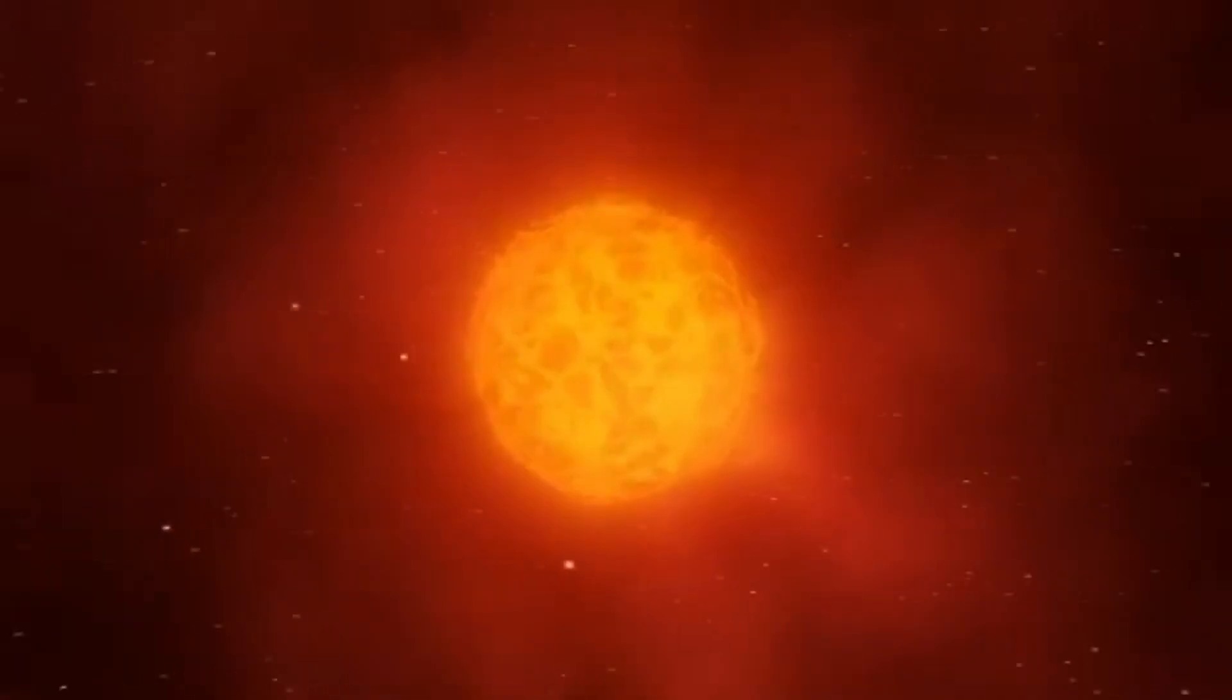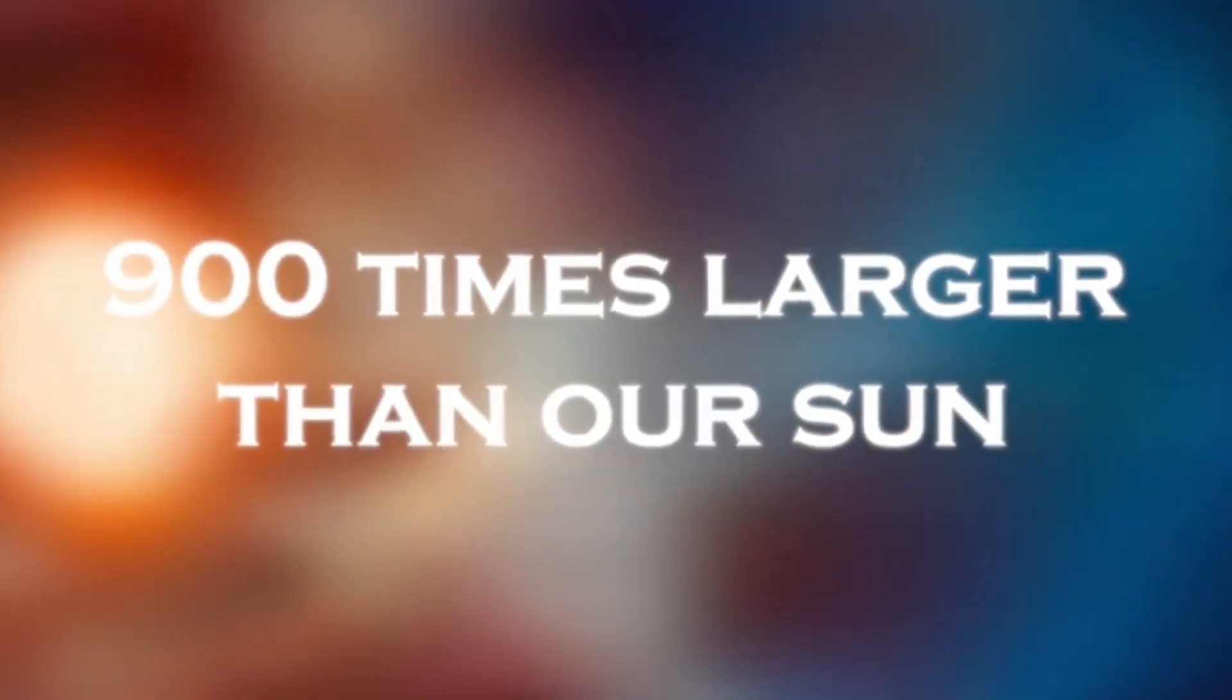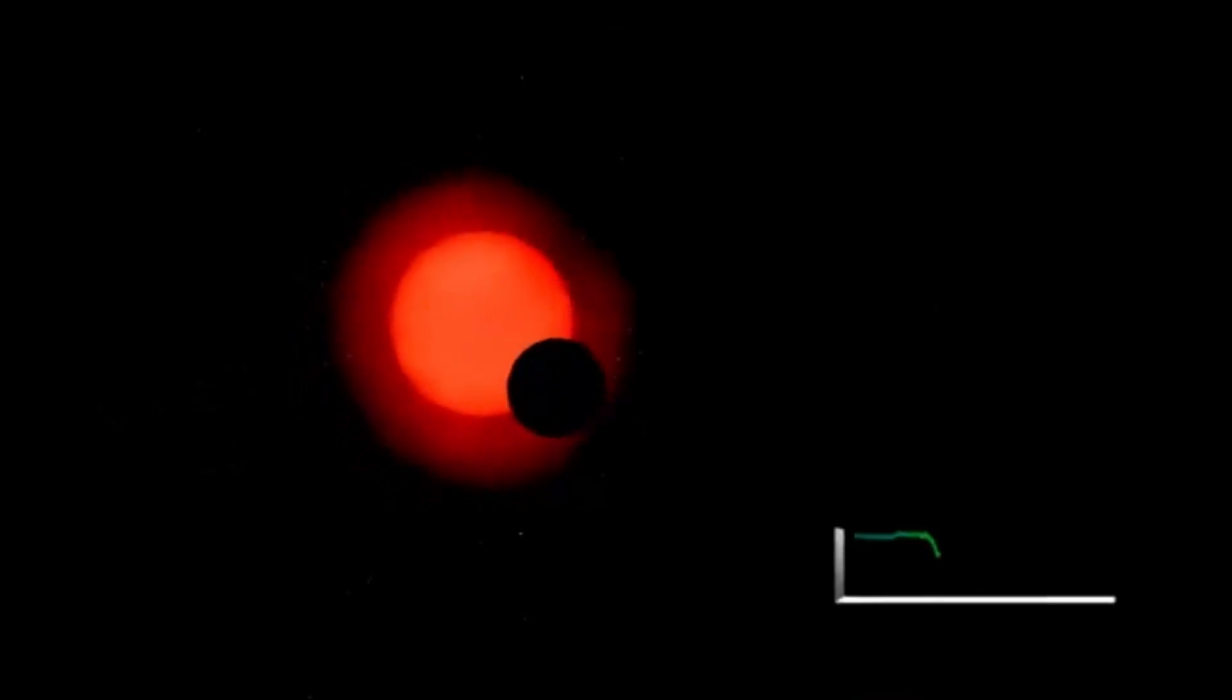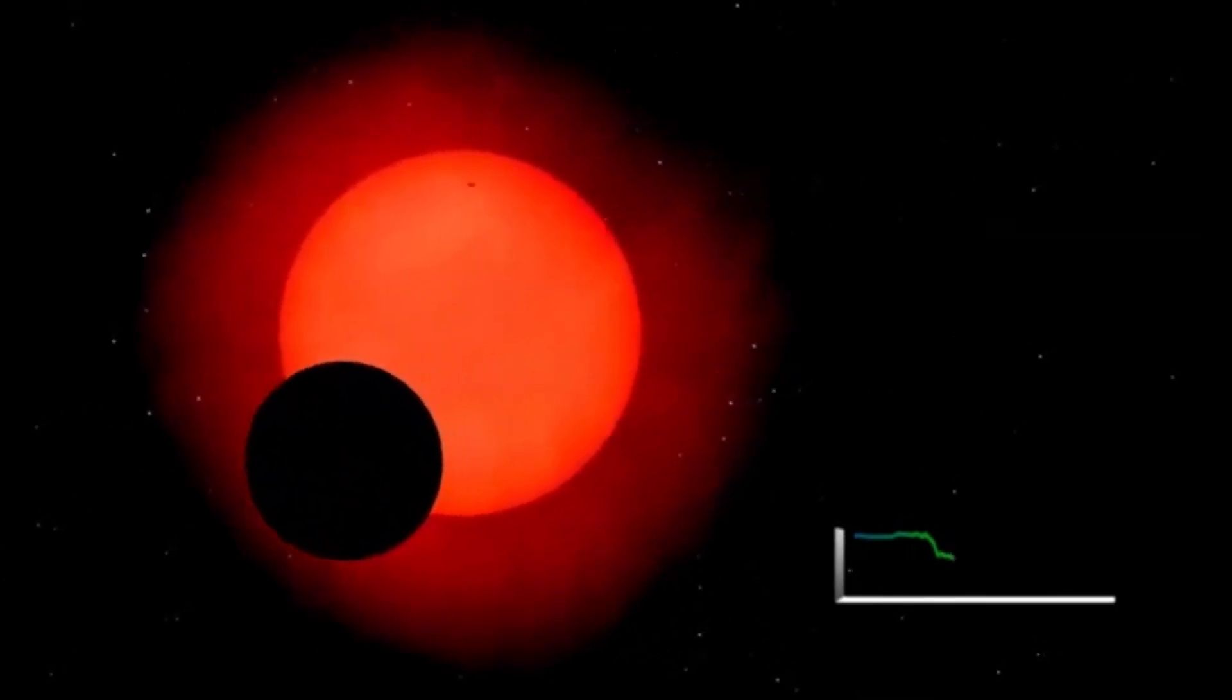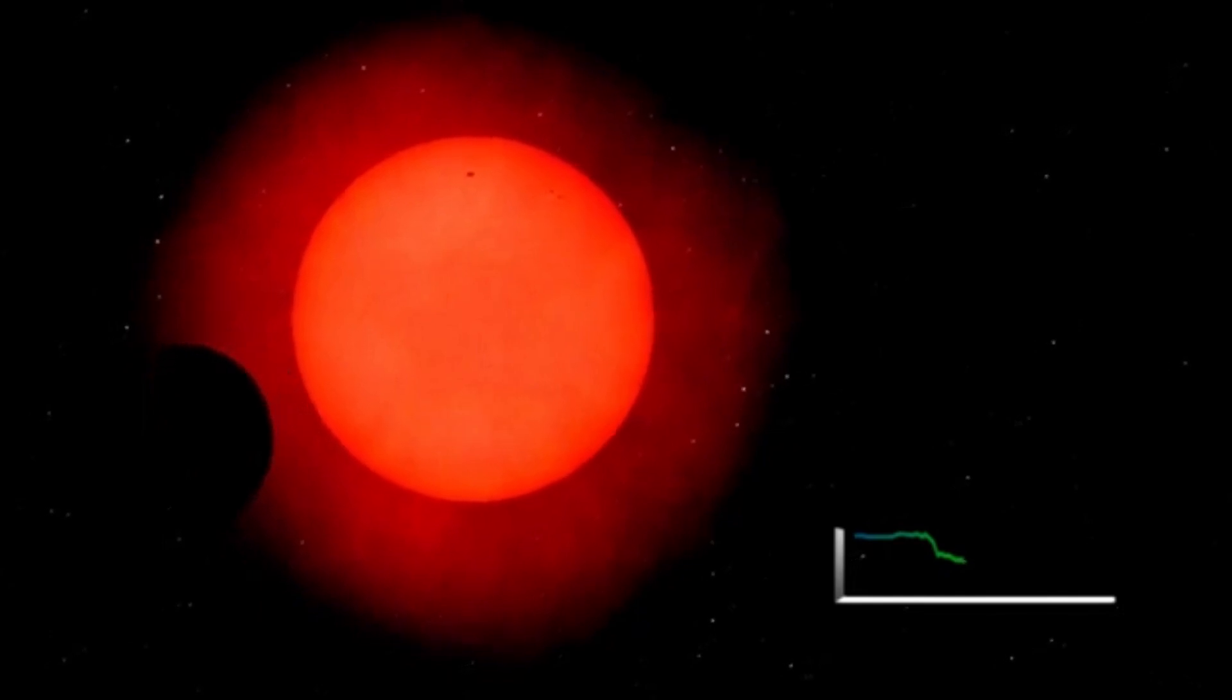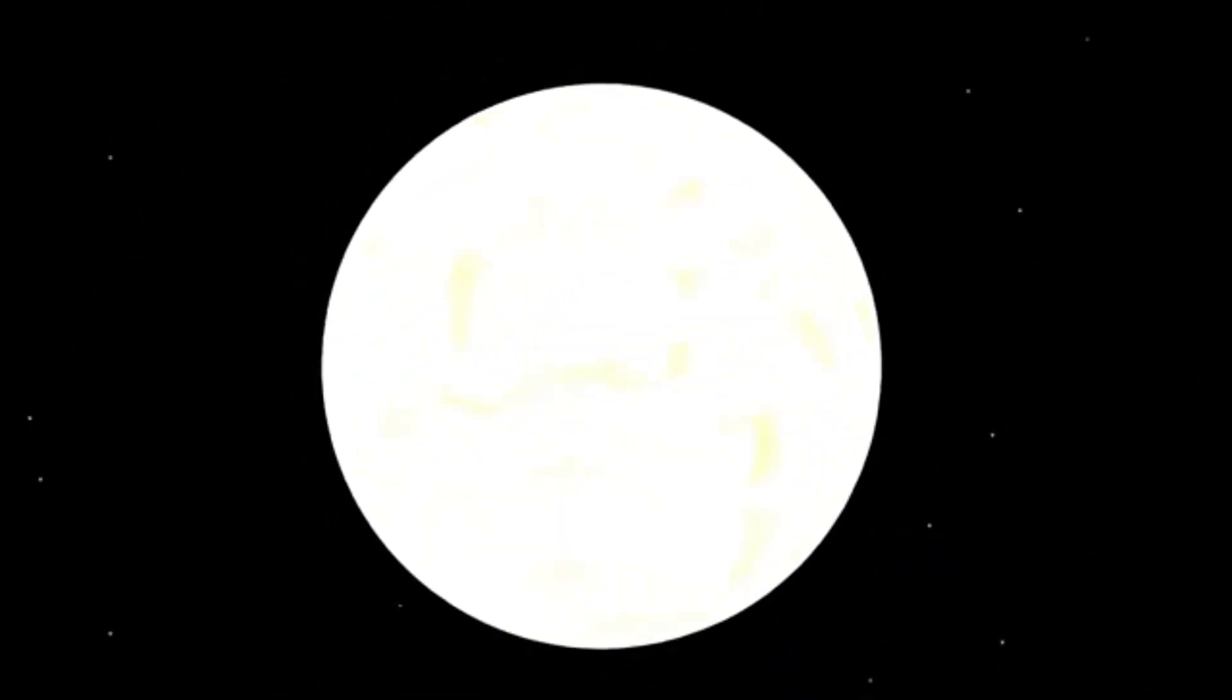The reddish hue that makes Betelgeuse so recognizable is a direct result of its surface temperature, which is significantly cooler than that of stars like our sun. While the sun's surface temperature is around 5,500 Kelvin, Betelgeuse's surface temperature is approximately 3,500 Kelvin. This cooler temperature causes Betelgeuse to emit light at a wavelength that appears red to our eyes, providing vital clues about the physical state of the star and the processes occurring within its vast gaseous envelope.